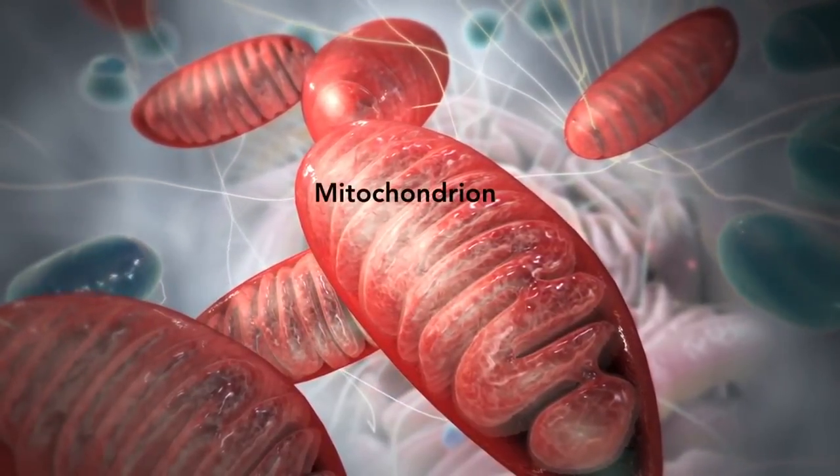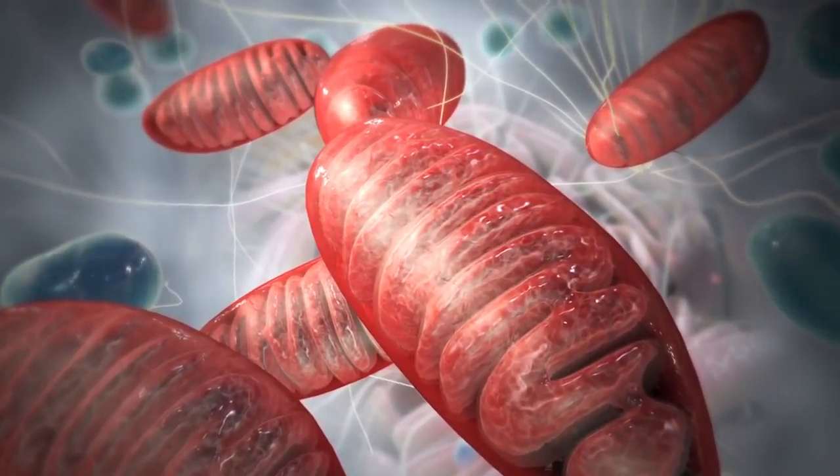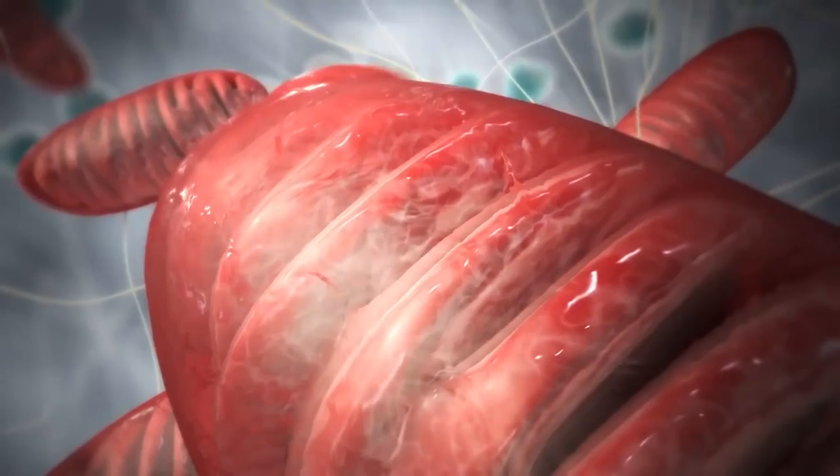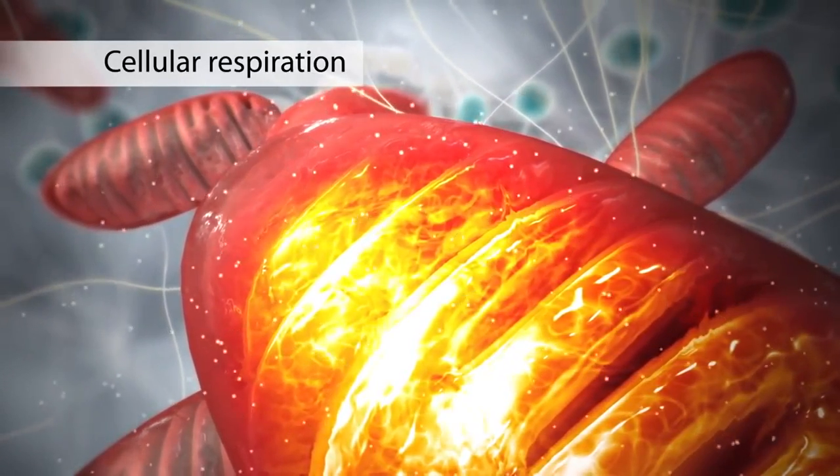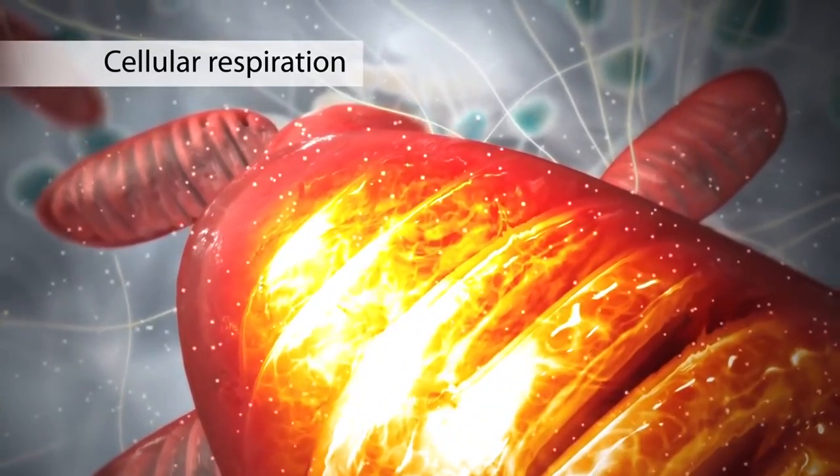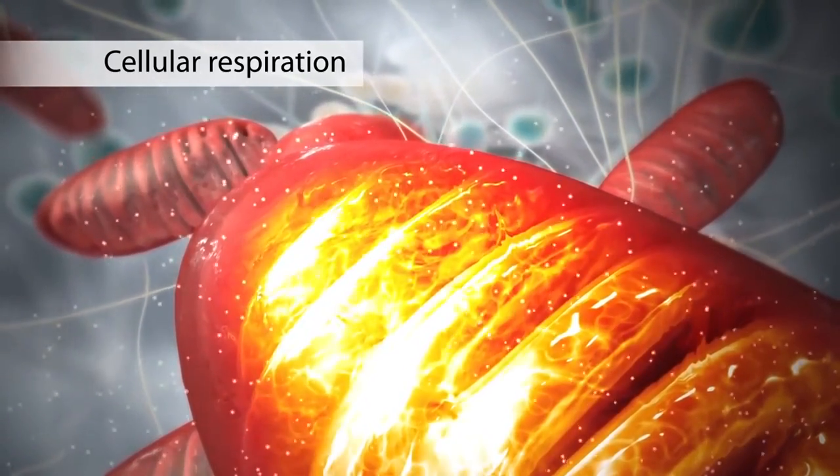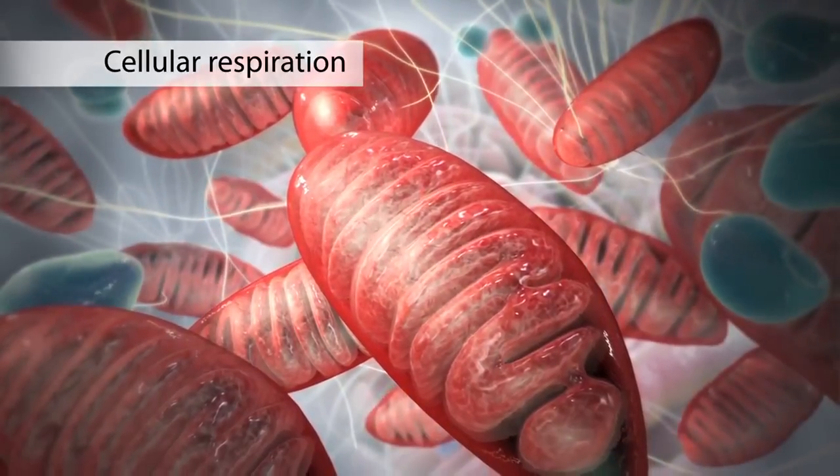The mitochondrion is an organelle that is the powerhouse for both animal and plant cells. During a process called cellular respiration, the mitochondria make ATP molecules that provide the energy for all of the cell's activities. Cells that need more energy have more mitochondria.